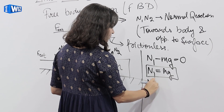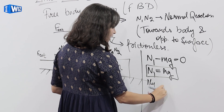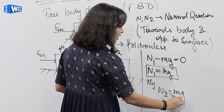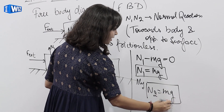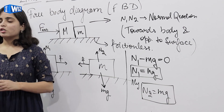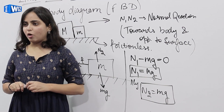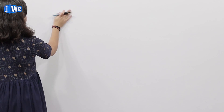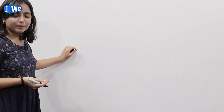Similarly, N2 is equals to small mg, where N1 and N2 are normal reactions. So these were the free body diagrams for a given system. अब उनकी application देखते हैं — free body diagrams कैसे help करते हैं एक problem को analyze करने में और solve करने में.